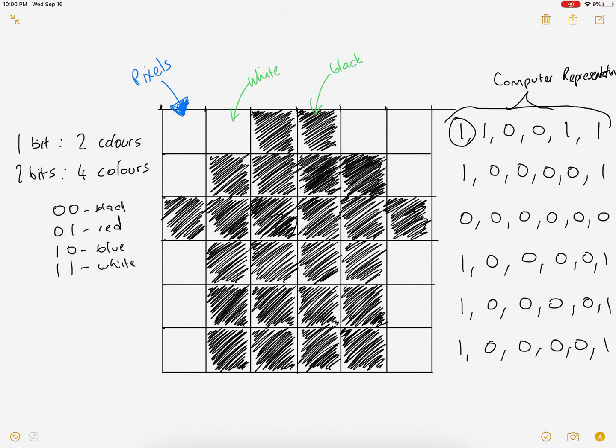This could be red for example, this could be blue, and this could be white. Again, as long as the computer knows what each pattern represents it doesn't really make any difference what numbers we use. So if we carry on, I'm not going to go too far but three bits would be eight, four bits would be 16, and so on.